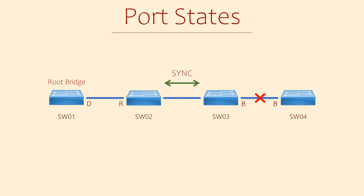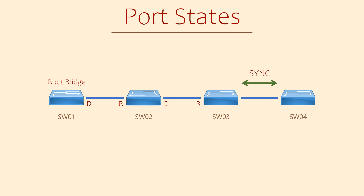This gets a bit complicated, but basically they use new fields in the BPDU message to share information. They negotiate the link to the root bridge first and enable that link. At this point, the downstream links are still blocked. One switch will propose which links should be forwarding and which should be blocked, then the sync process completes for downstream switches and the appropriate links transition to forwarding.